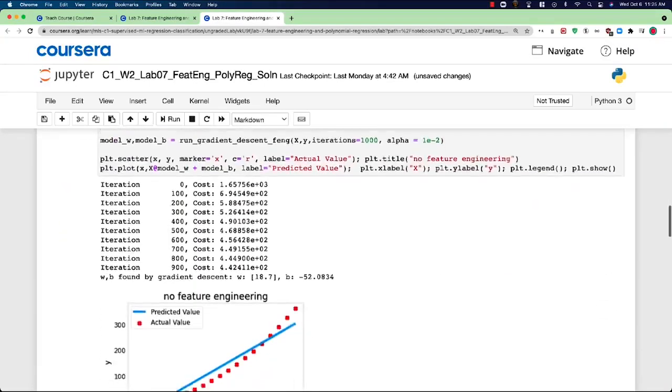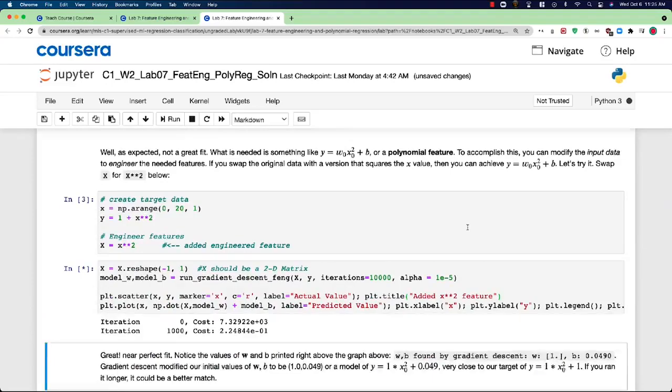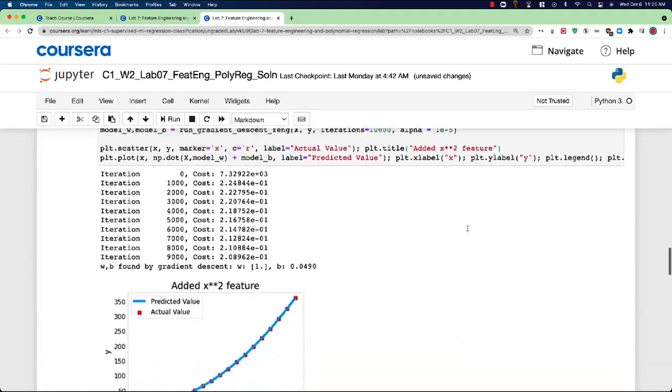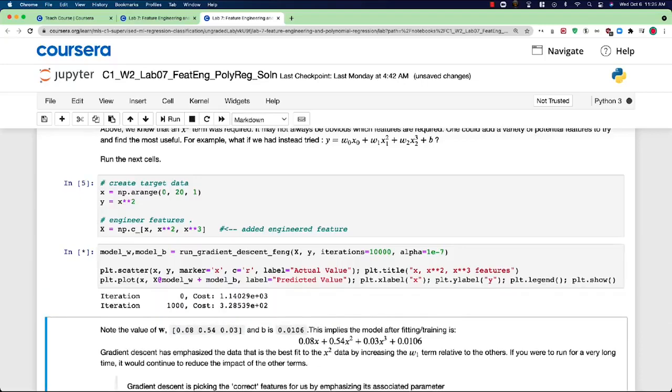In the optional lab that follows this video, you will see some code that implements polynomial regression using features like x, x squared, and x cubed. So please take a look and run the code and see how it works.